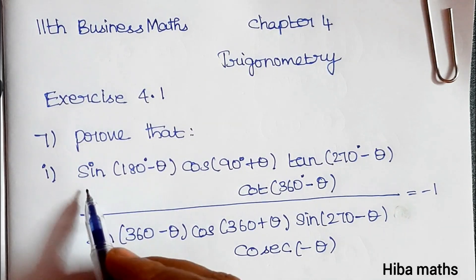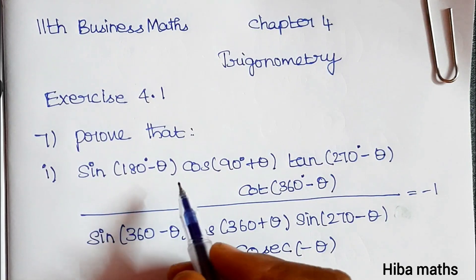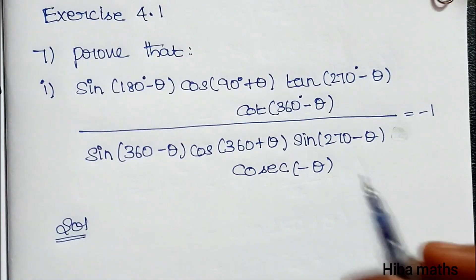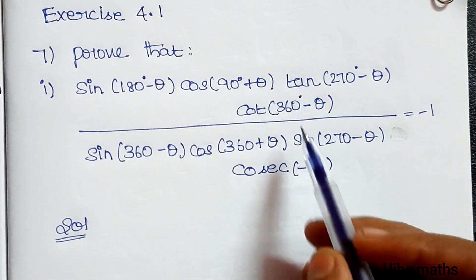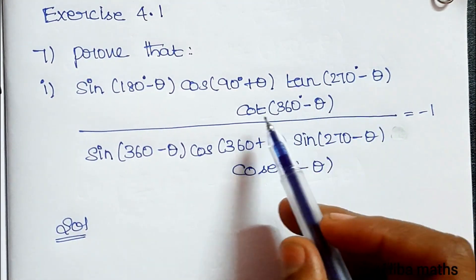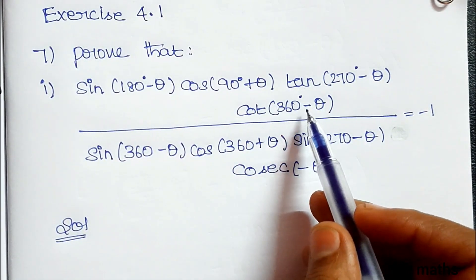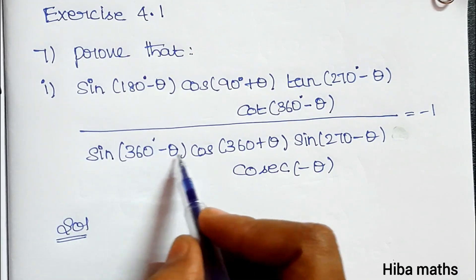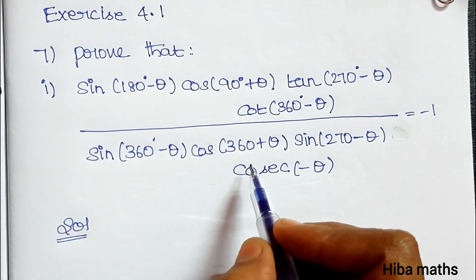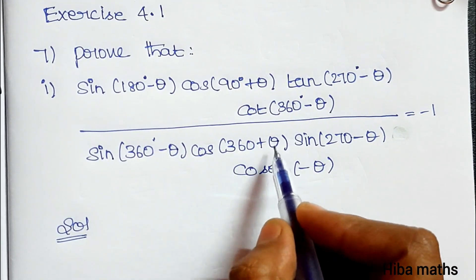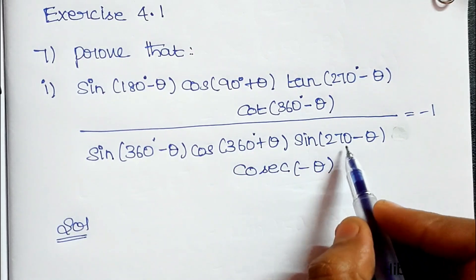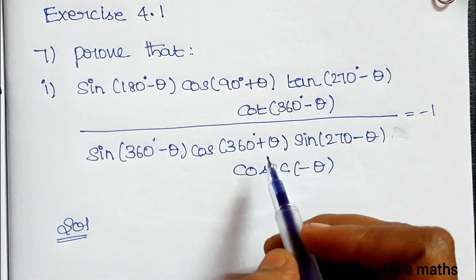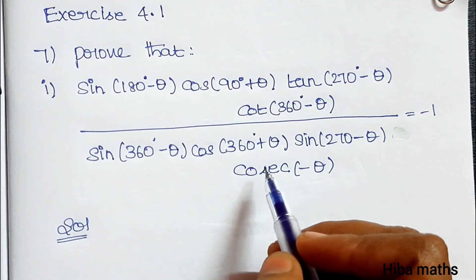Prove that sin(180° − θ) · cos(90° + θ) · tan(270° − θ) · cos(360° − θ) divided by sin(360° − θ) · cos(360° + θ) · sin(270° − θ) · cosec(−θ) is equal to minus 1.